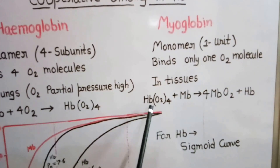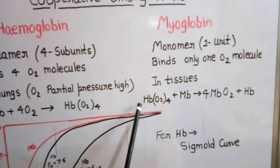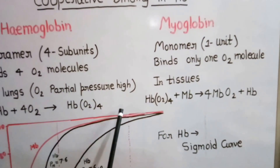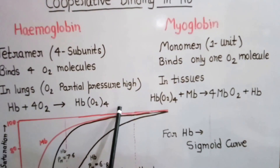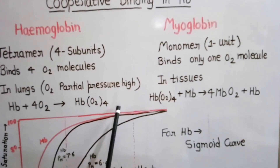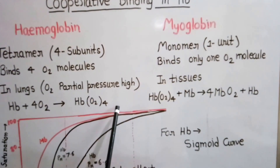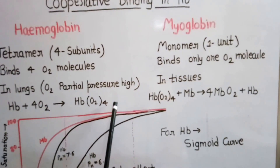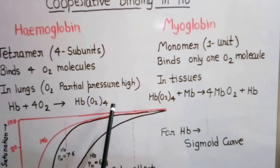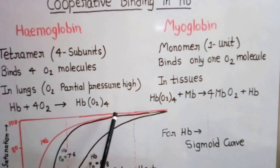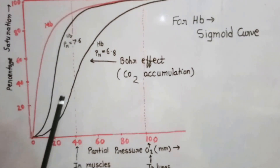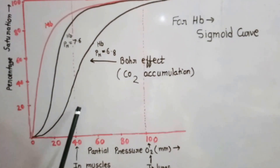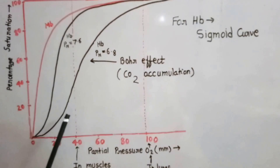In hemoglobin, a special type of binding is found — cooperative binding. This means all its subunits work interdependently: the binding of one unit increases the affinity of other units. To understand cooperative binding, we will examine the oxygen binding curve.